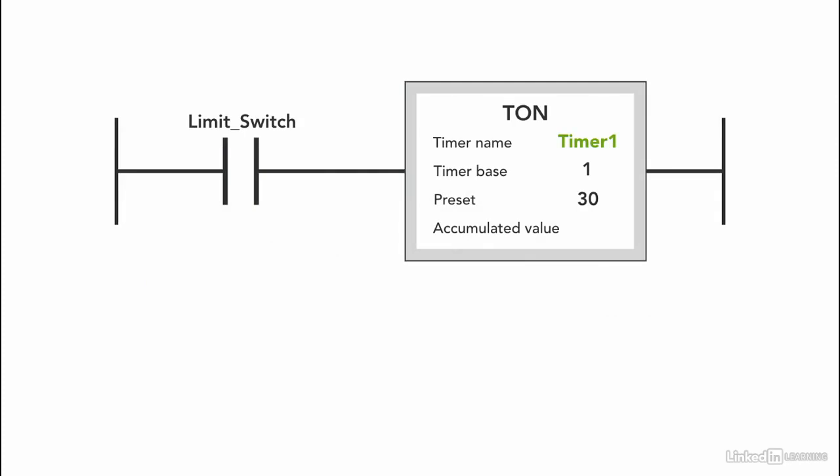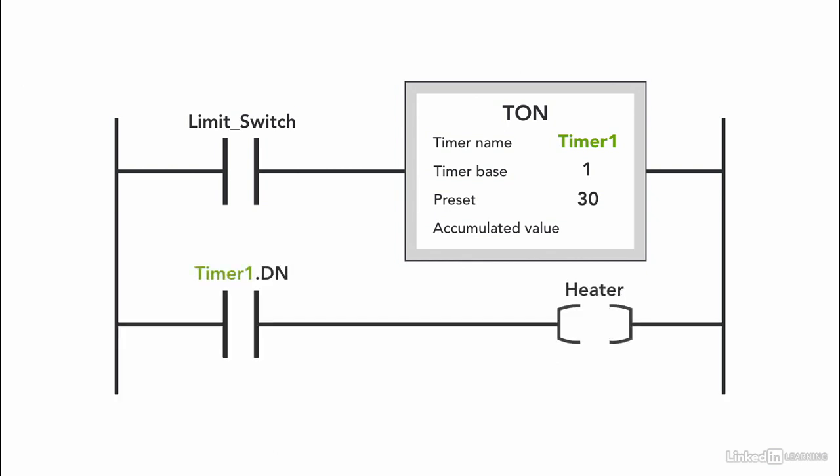We use an XIC instruction for the limit switch, and when the limit switch is activated, the timer starts timing for 30 seconds. Using a timer base of 1 second and a preset of 30 seconds, after the timer is done timing, the timer done bit is true and as a result, the heater starts.